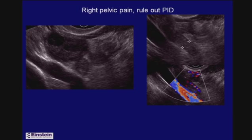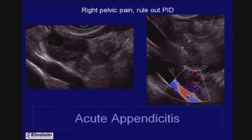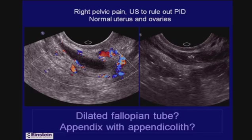A patient with right pelvic pain to rule out PID had a normal right ovary and next to it in cross-section a tubular structure that was blind-ending with a slightly thick wall — actually a gut signature. With color there was hyperemia in the wall of this blind-ending structure, which turned out to be the appendix, which can fall into the pelvis and look tubular but has a different appearance from a fallopian tube — it has a bowel signature.